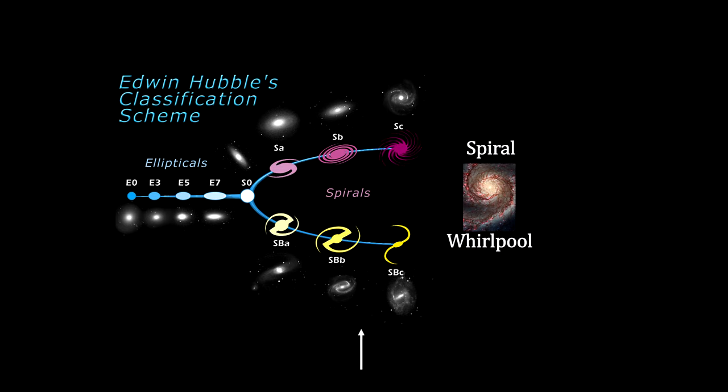As we move from A to C, the spiral arm structure becomes more open, the amount of dust and young stars decreases, and the central bulge of the galaxy decreases in size relative to the disk size.